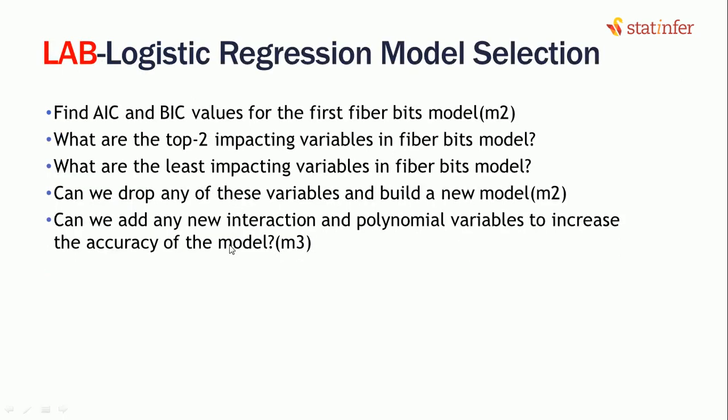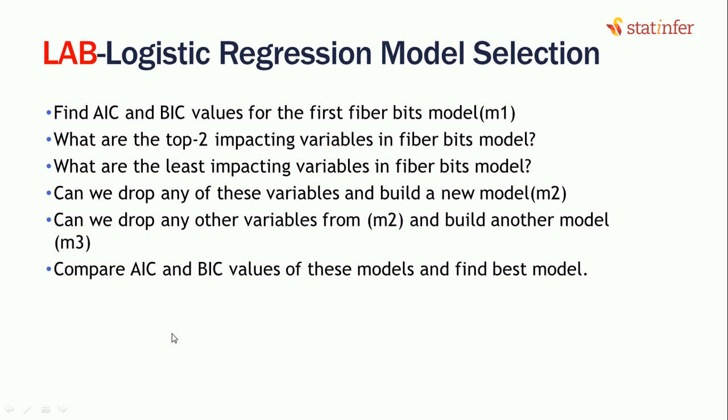In Python, we are going to build three different models: model 1, model 2, and model 3, with drastic difference of variables that we are going to choose, and we will compare the AIC and BIC values of these models and select which model is going to be better for us. Model 1 will take all the variables, and using the AIC and BIC values and impacting variables, I will build model 2, and then I will again drop a few variables and add few variables back in and build model 3. Then we will compare the AIC and BIC values of these three models and find the best out of three.